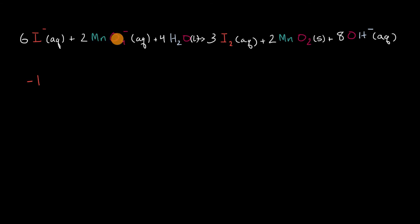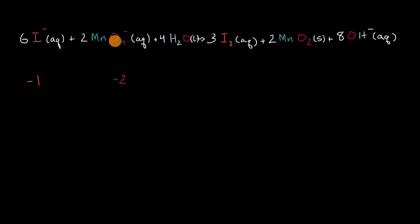Now let's move over to this permanganate ion right over here. This one's a little bit more involved to figure out the oxidation numbers, but what we generally remember is that oxygen is quite electronegative. It is likely to hog two electrons, and when we think about hypothetical charge with oxidation numbers, oxygen is going to have a negative two oxidation number, because it likes to hog those two extra electrons. So if each of these four oxygens has a hypothetical charge of negative two, that would be negative eight total, and we see that this entire ion has a negative one charge. So that means that the manganese has to have an oxidation number of plus seven.